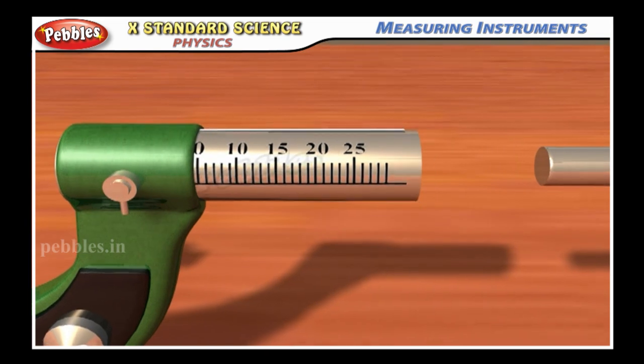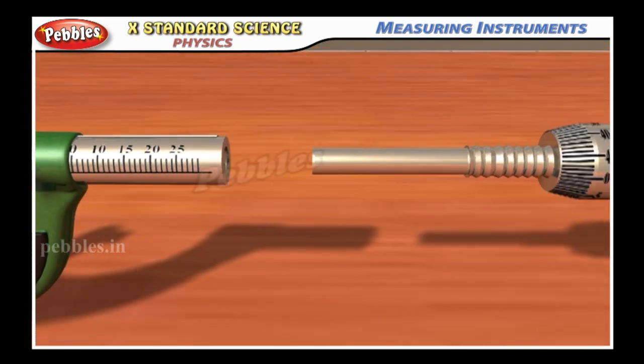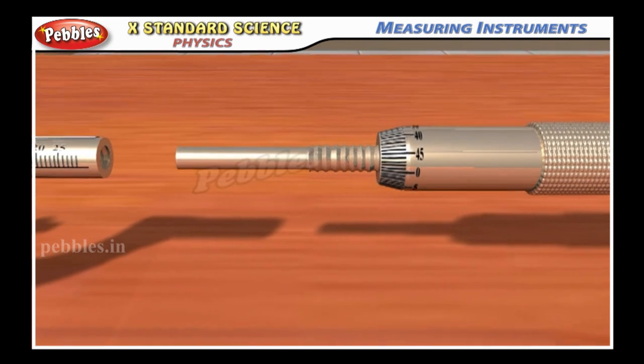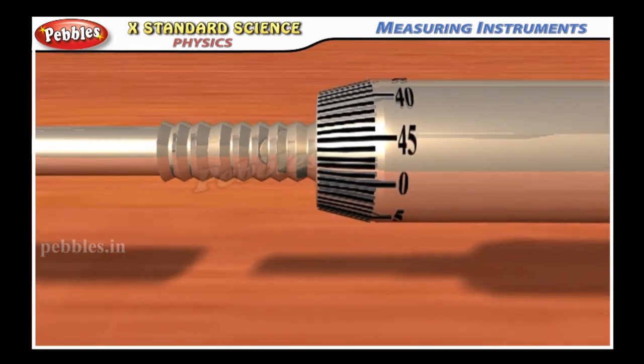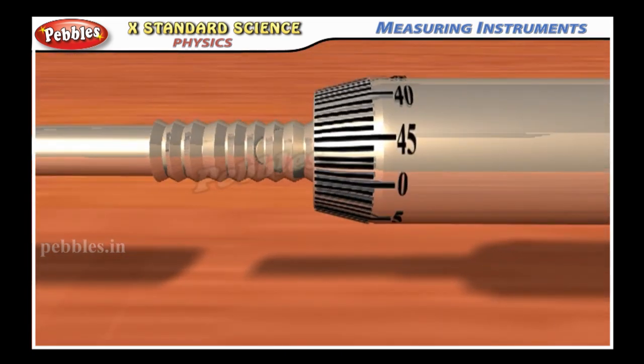One end of the screw is attached to a sleeve. The head of the sleeve is divided into 100 divisions called the head scale.